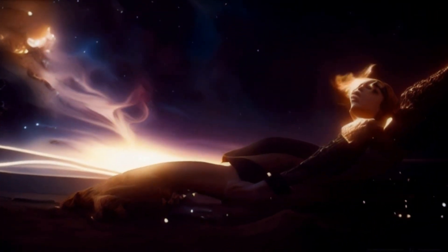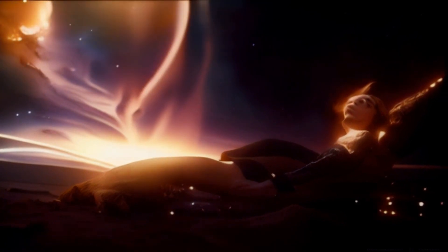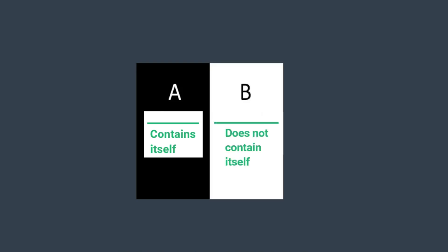Mathematical set theory brings a fascinating perspective to this concept. Let's first consider two contrasting types of sets. The first type, which we'll call set A, consists of all sets that contain themselves. Its opposite, set B, is a set that does not contain itself. These two sets are intriguing because they seem to mirror the state of annihilation between existence and non-existence that we're exploring.